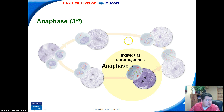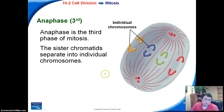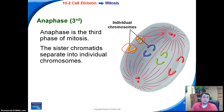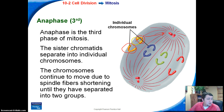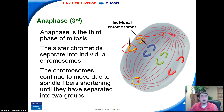Anaphase is the third phase of mitosis. The chromosomes are beginning to pull apart — the sister chromatids separate into individual chromosomes. One chromatid goes to one end, and the other goes to the opposite end, so the chromosomes are separating to opposite sides of the cell. The spindle fibers do that because they begin to shorten, and since they are attached at the centromere, they move each chromatid toward the pole of its corresponding side.